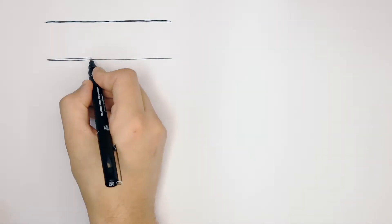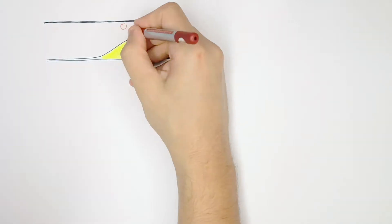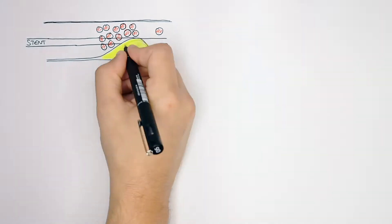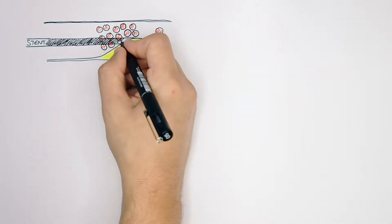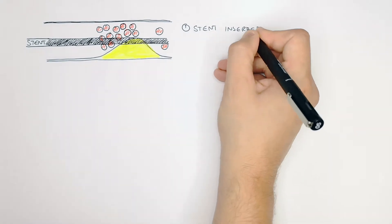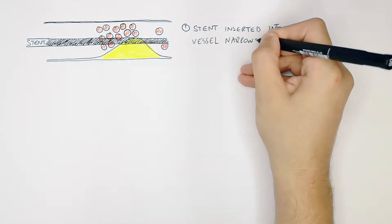To cure a blocked coronary artery blocked by fatty plaque buildup, you can use a stent. A stent is inserted into the coronary artery like this, inserted into the vessel which is narrowed by the plaque deposits.